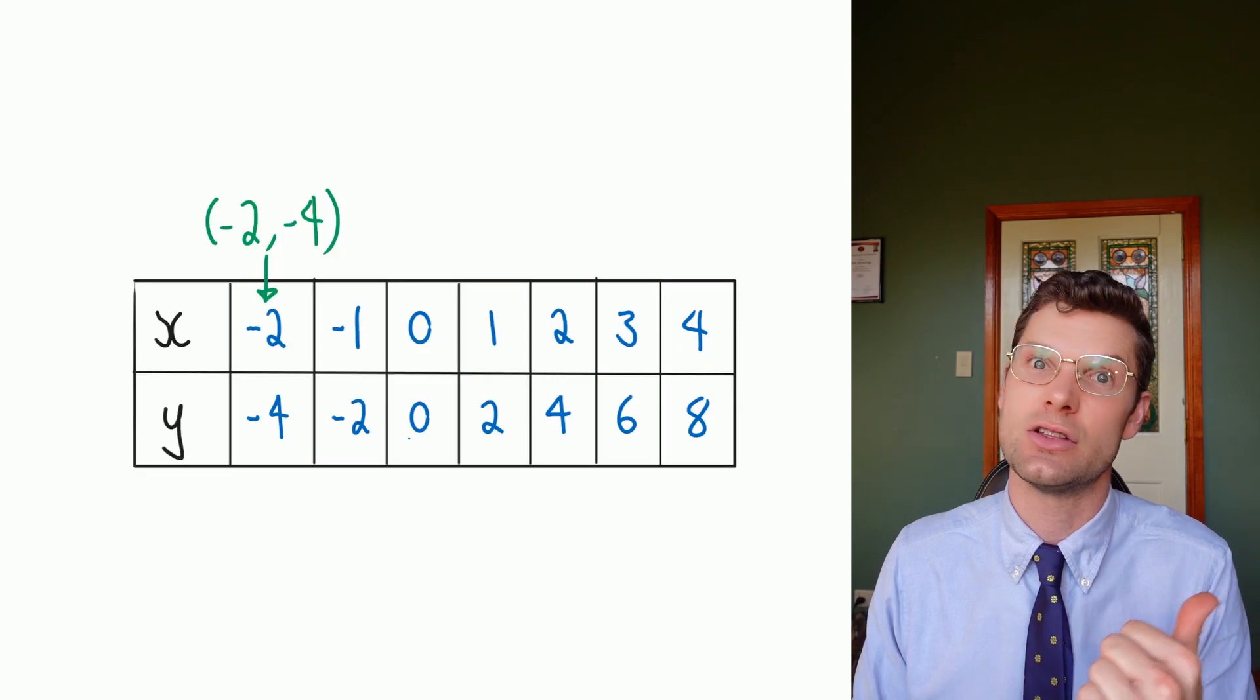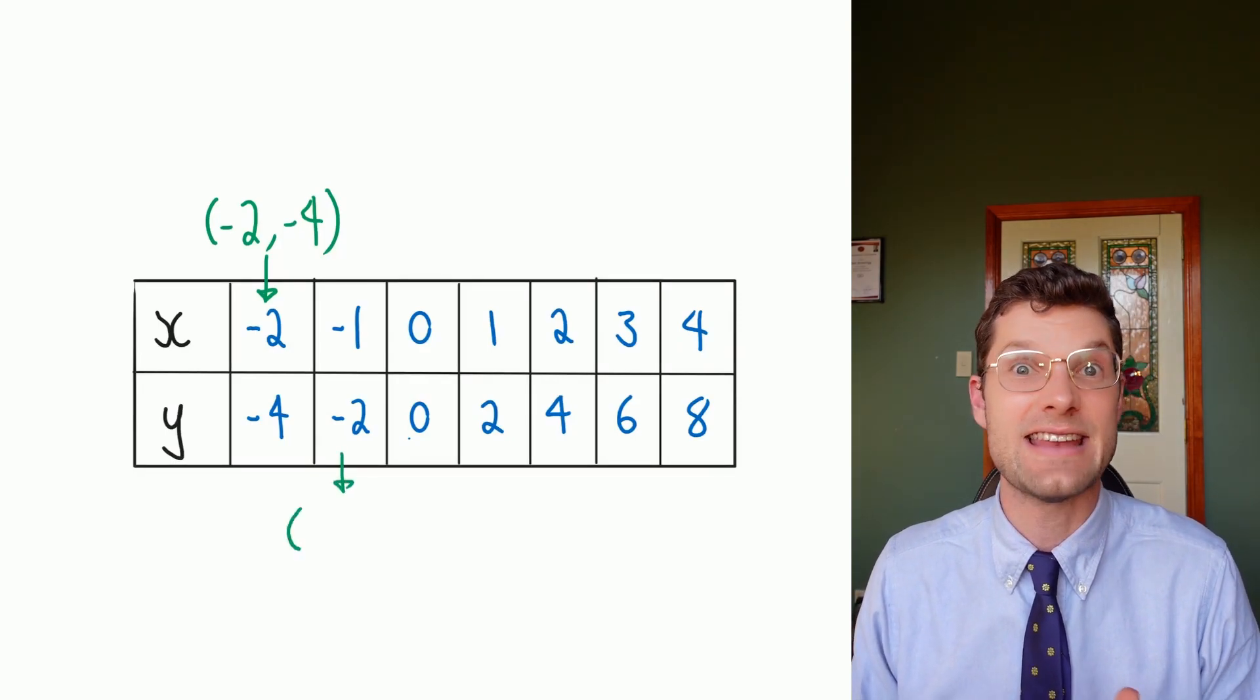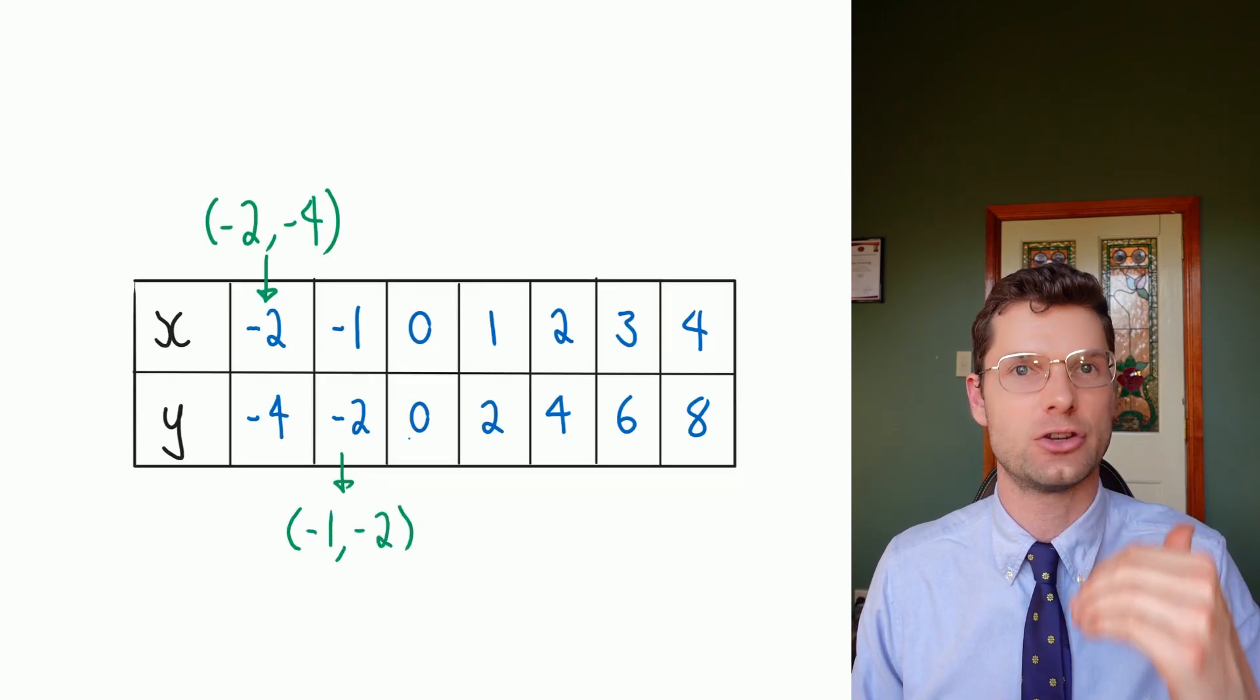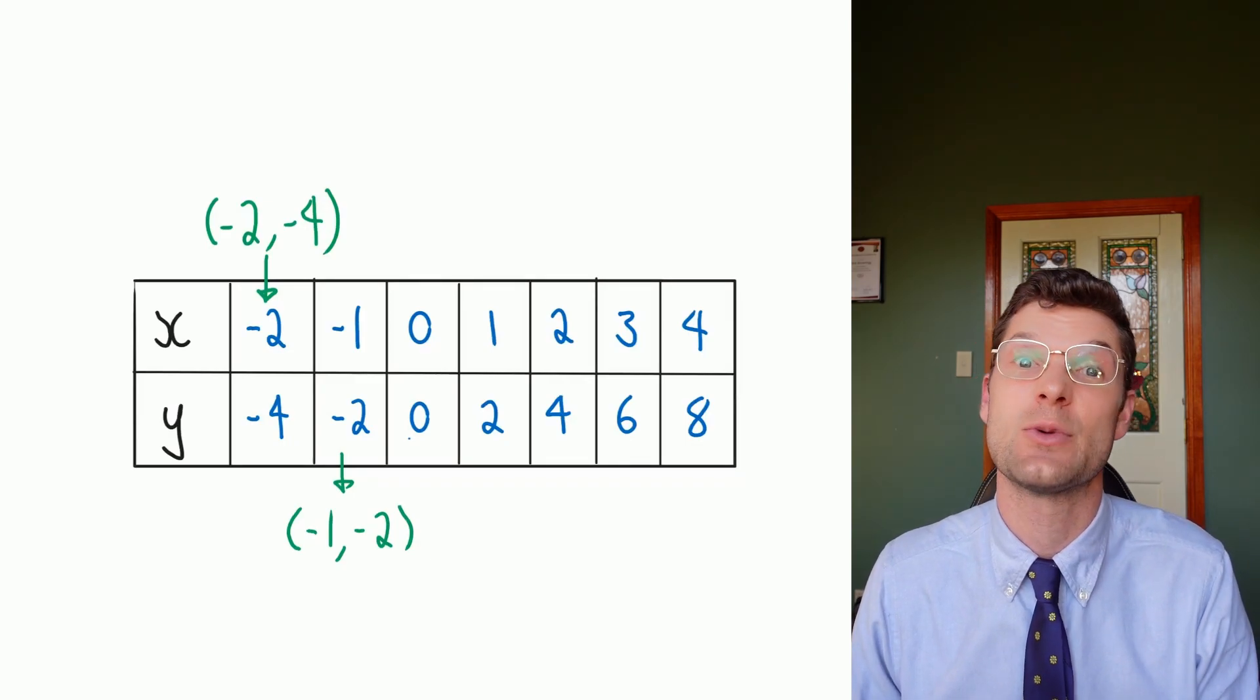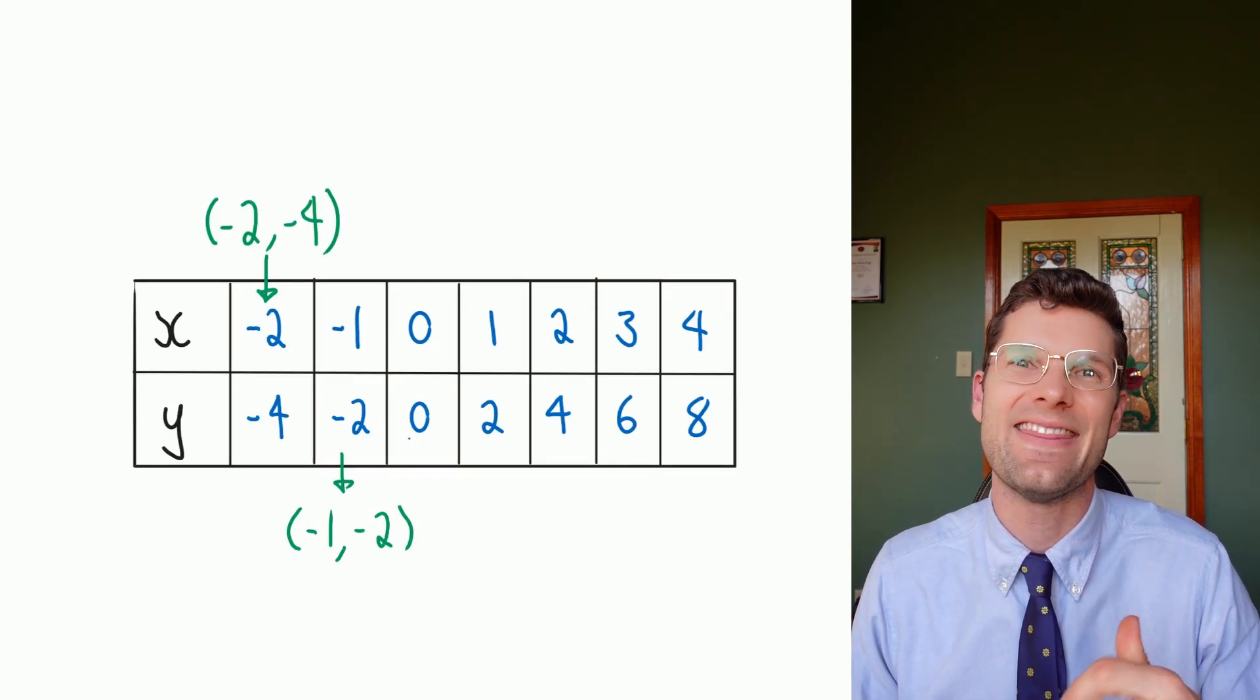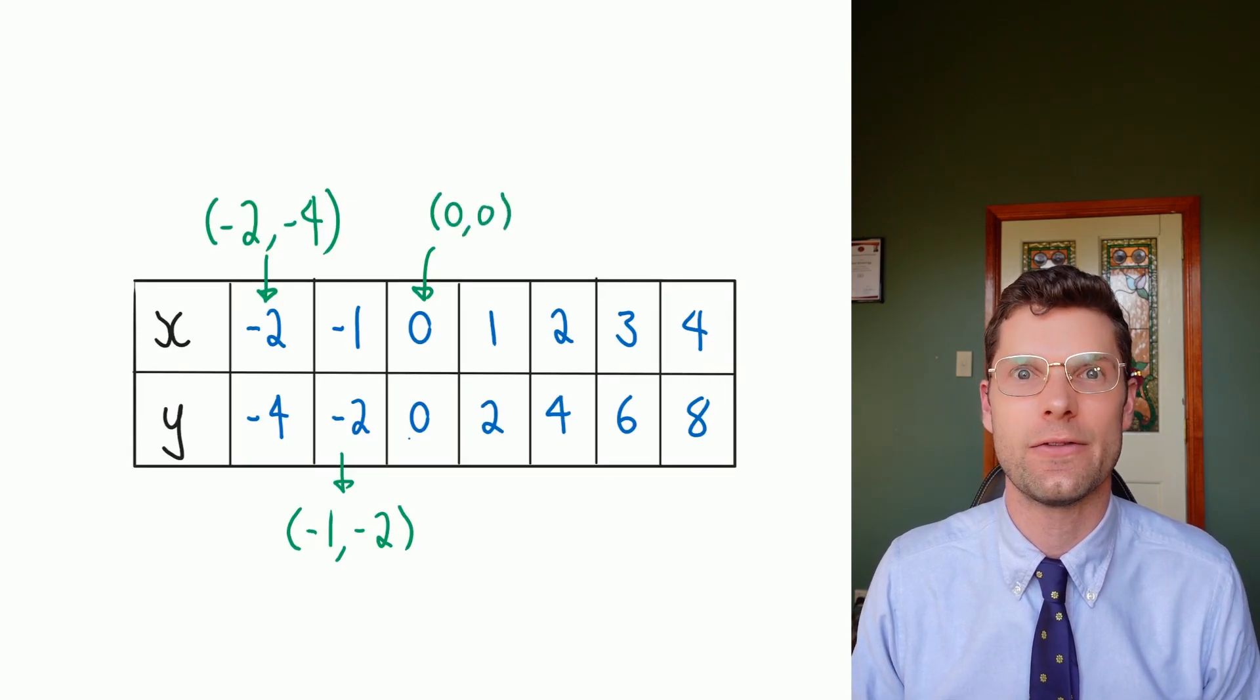Then if I looked at the next one across, that's (-1, -2). We always read from the top down. So this position, (-1, -2), is telling us we're going to the left one spot and then down two spots. That next one there is (0, 0). That means we're at the origin.